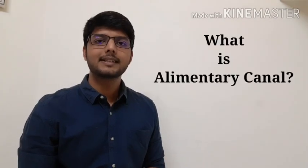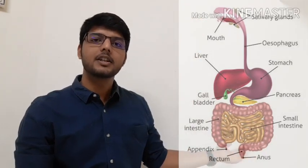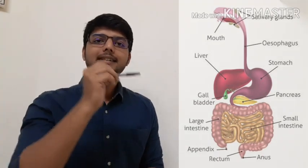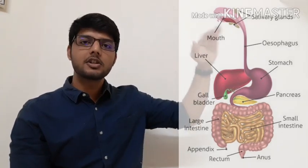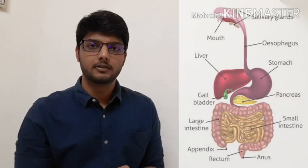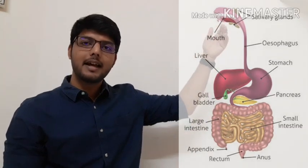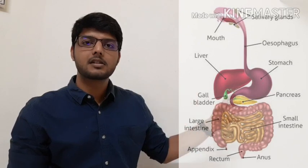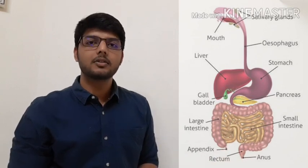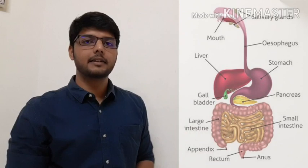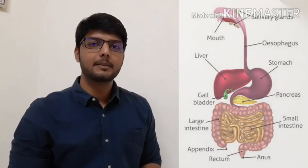Now we will see what is the alimentary canal. A long tube which starts from the mouth to the anus in a human being is called the alimentary canal. In this alimentary canal, the process of digestion and absorption takes place. This tube is approximately eight to nine meters long. It contains the mouth, esophagus (also known as the food pipe), stomach, small intestine, large intestine, rectum, and anus. There are also three glands involved: first the salivary gland, second the pancreas, and third the liver.